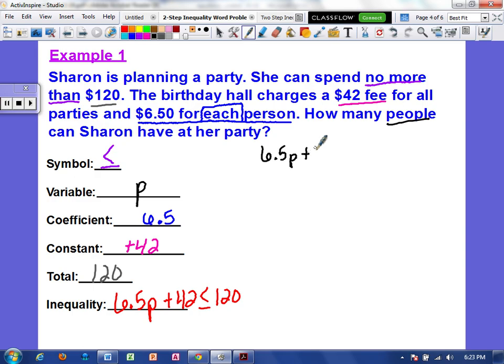I'm just going to rewrite it. Alright, the inverse of adding 42 would be to subtract 42. So I know that cancels and I'm left with 6.5P. And I'm going to carry down the symbol. 120 minus 42. I cannot do 0 minus 2 so I have to borrow. 10 minus 2 is 8. Borrow again. 11 minus 4 is 7, so 78.